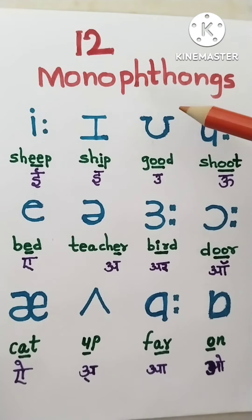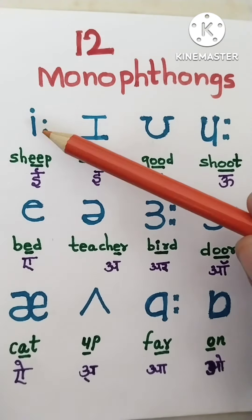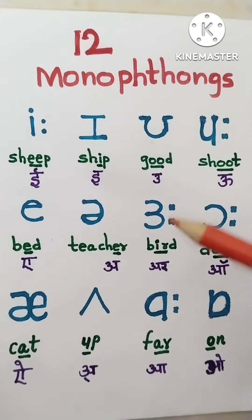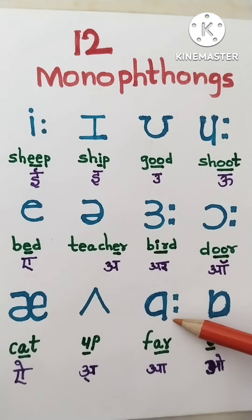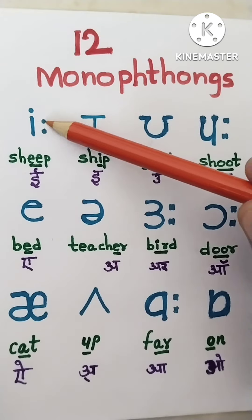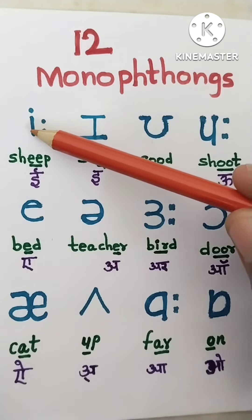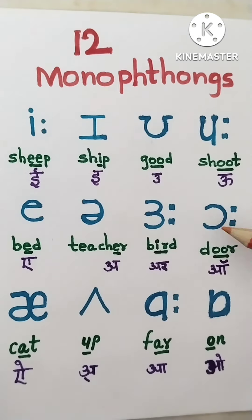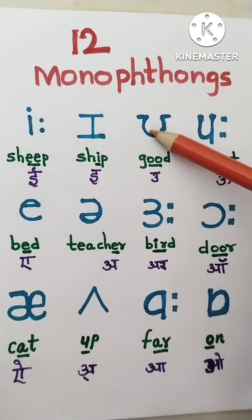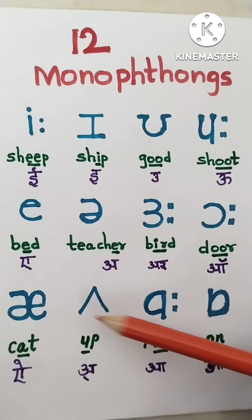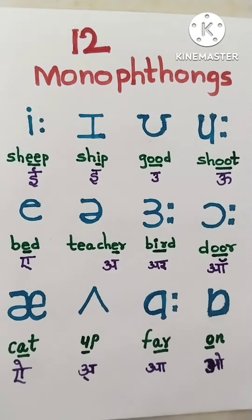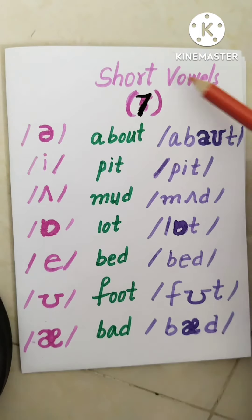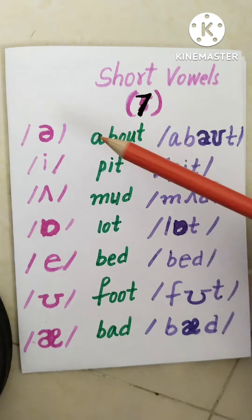We have 12 monophthongs. In these 12 monophthongs we have 5 long vowels. You can see 2 dots beside the symbol. So these are 5 vowels and the remaining 7 are short vowels. Let us see some examples.